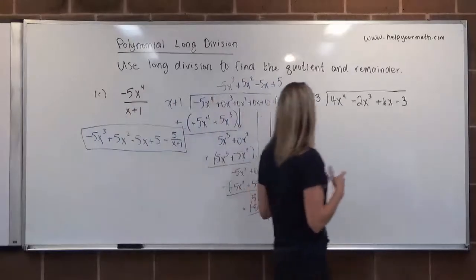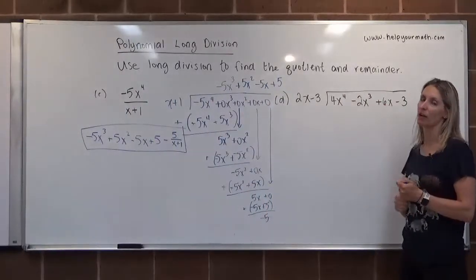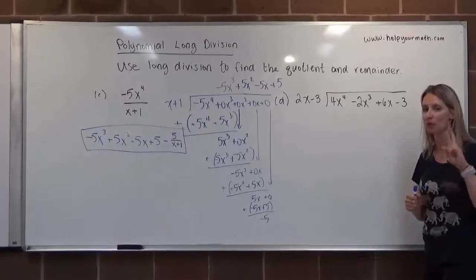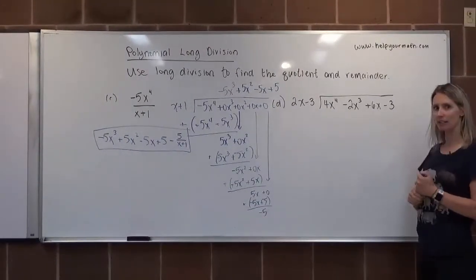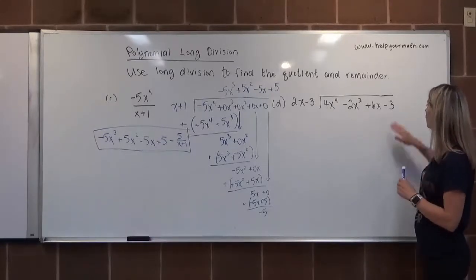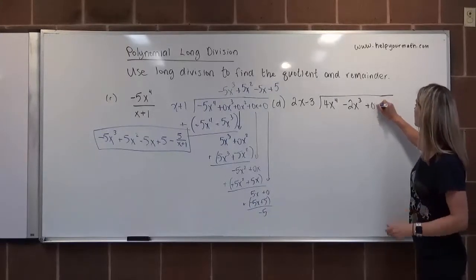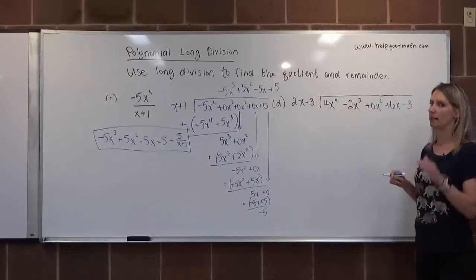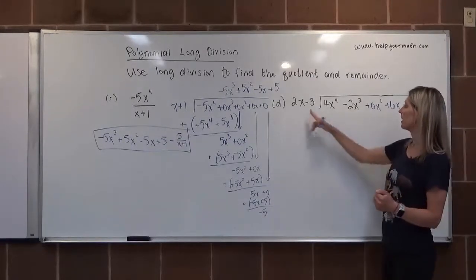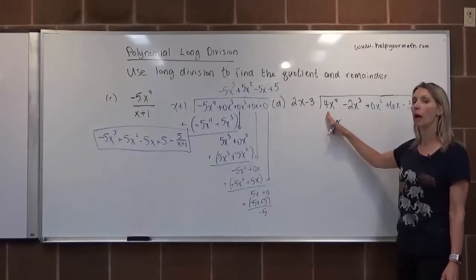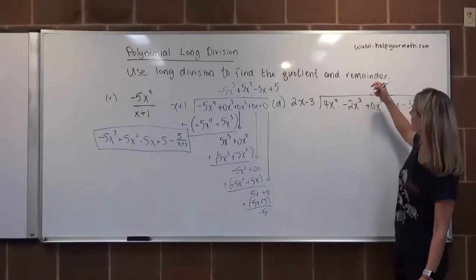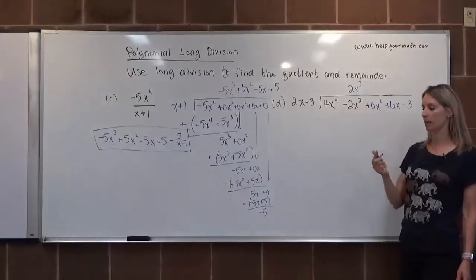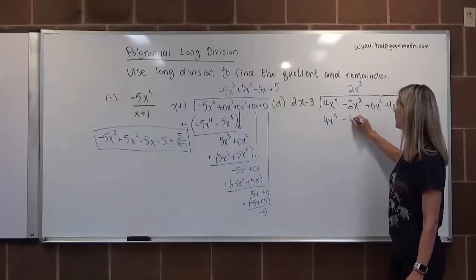In part D, this is the first time our divisor's first term has a coefficient besides 1, and it also has subtraction — two new things. The dividend is 4x⁴-2x³+6x-3, but it's missing the x² term, so I'll write it as 4x⁴-2x³+0x²+6x-3. We divide 2x into 4x⁴ to get 2x³, and multiply 2x³ by (2x-3) to get 4x⁴-6x³.